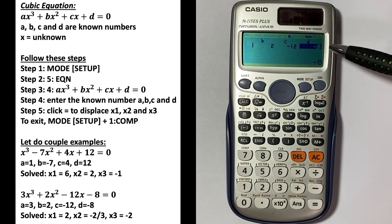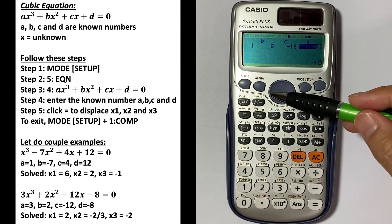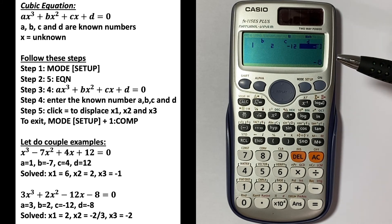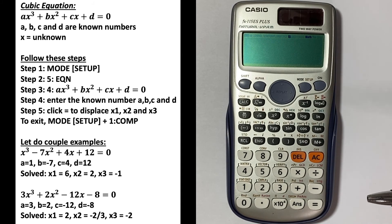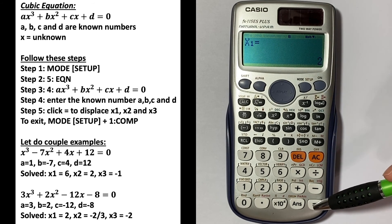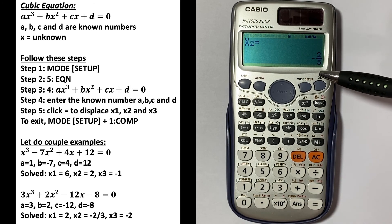Once you have everything entered, you can double-check a, b, c, and d, then just click equals. You will solve for x1 = 2.